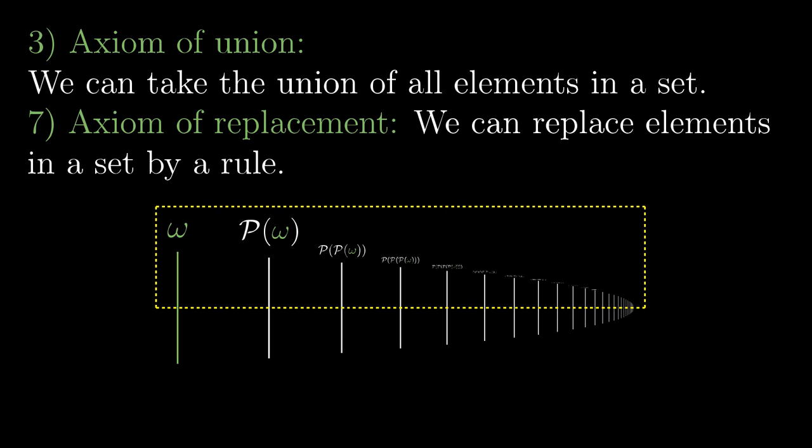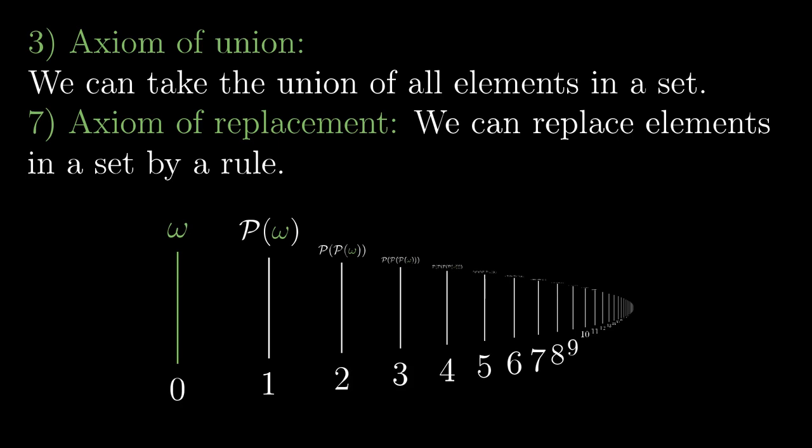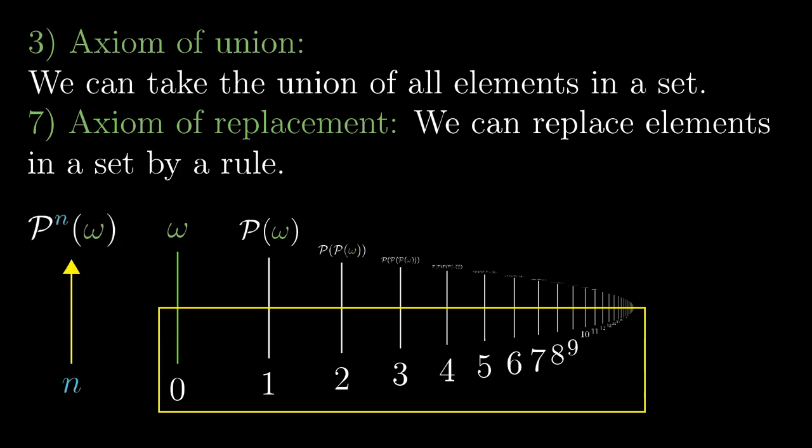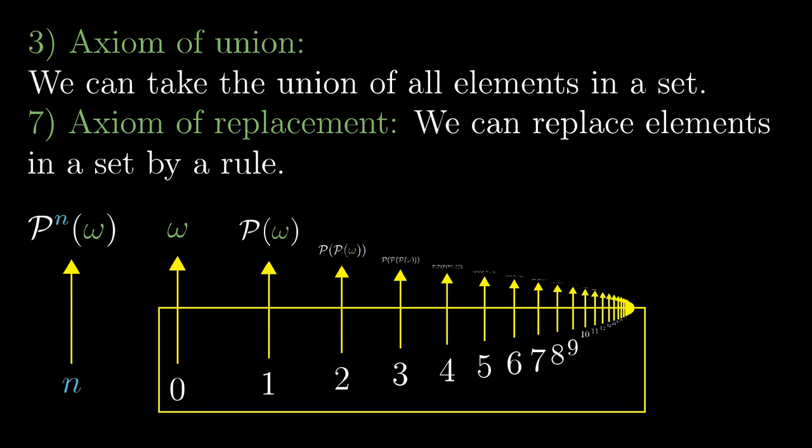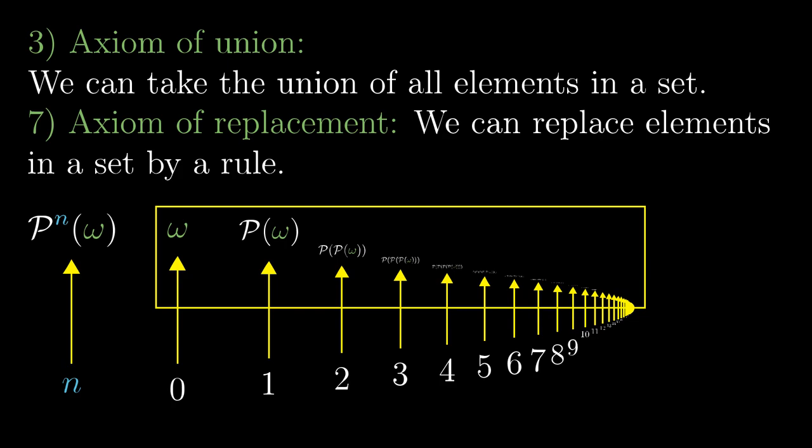Whenever we have a rule on how to replace an element for another and a given set, we can apply the rule to all of its elements and pack all the results into a new set. If it feels too general, it should get clearer on the example. We don't know yet whether there is a set containing all the power sets, but the bars here represent natural numbers. And we already know that there is a set of natural numbers. It follows from the axiom of infinity. To every natural number n, we assign the n times iterated power set of omega. That is our rule. So 0 goes to omega, 1 goes to P of omega, and so on. Therefore, the axiom of replacement allows us to also pack all the n times iterated power sets into a set.